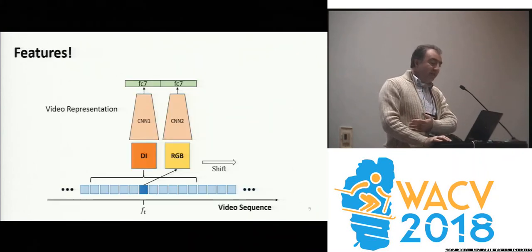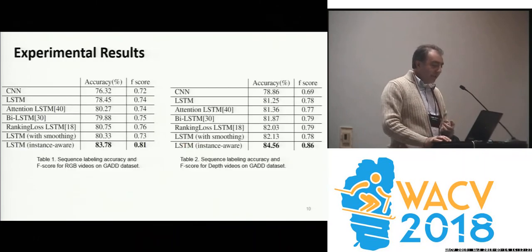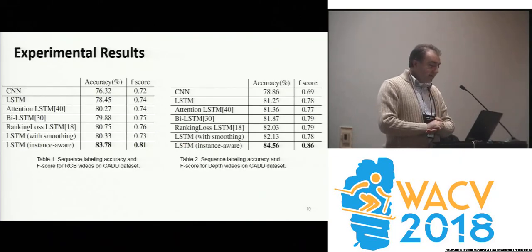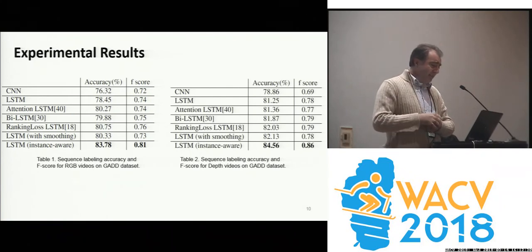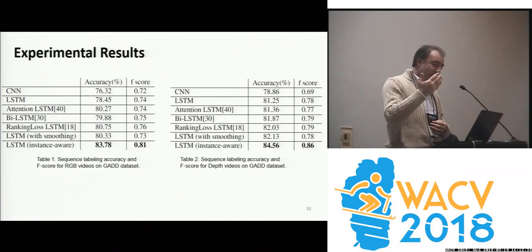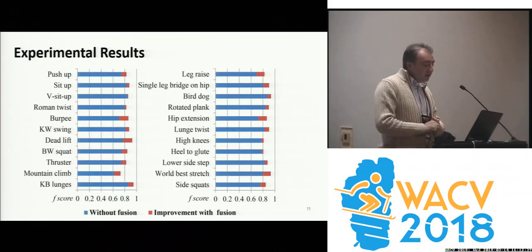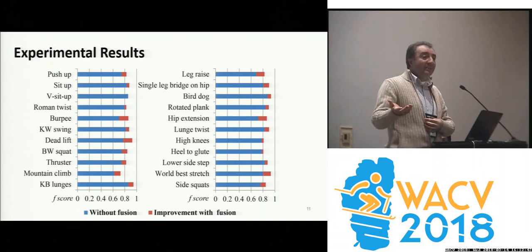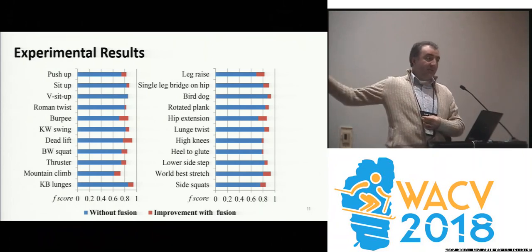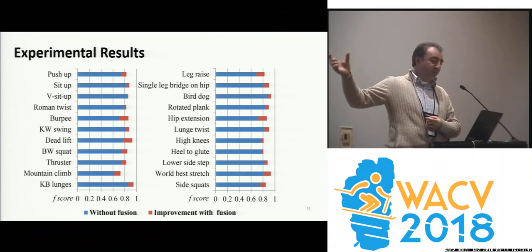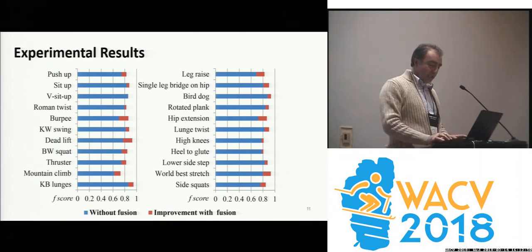Our features use dynamic images, RGB, and a convolutional network with concatenation. We compare against CNN-LSTM, attention LSTM, bi-directional LSTM, ranking loss, and other methods. Using either RGB or depth, this algorithm is superior. We also show how much the fusion improves frame-wise labeling — the red values indicate the improvement factors. That concludes my talk. Thank you.